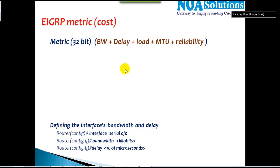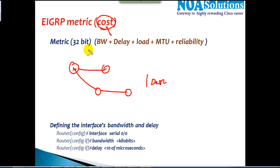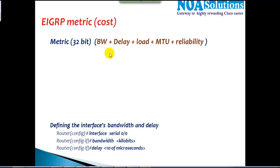In this video we will be discussing the EIGRP metric process. Like we discussed, router A has two possible routes to reach a specific destination, and it calculates the best route based on something called cost. We'll understand how this cost is actually calculated and what different values are involved in the metric calculation in EIGRP.